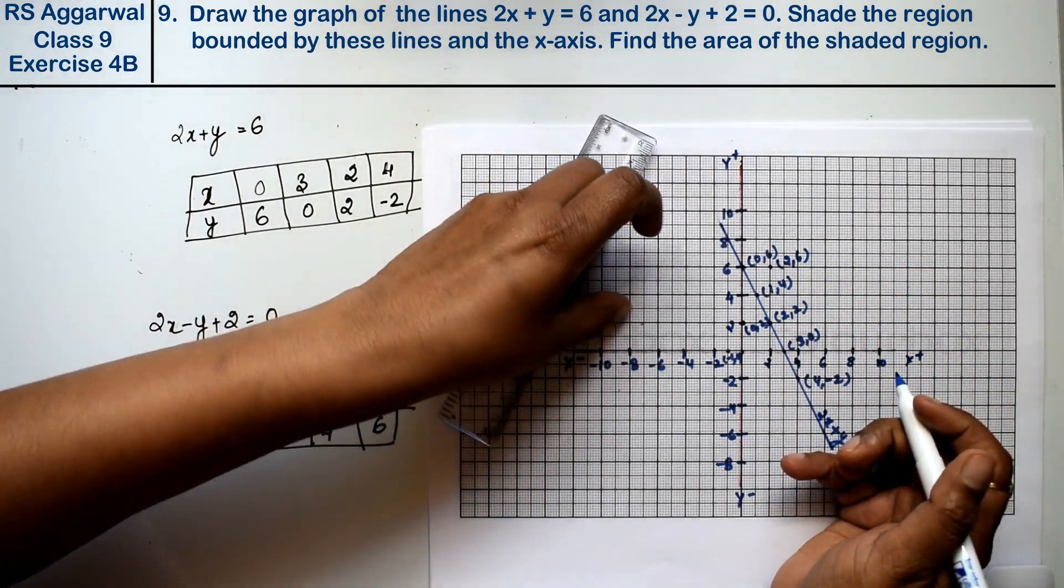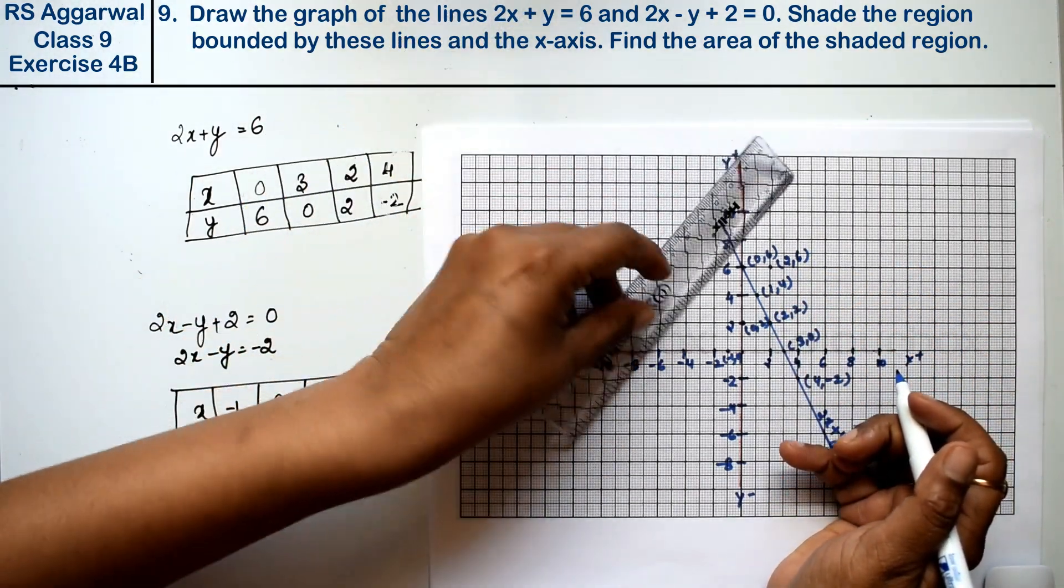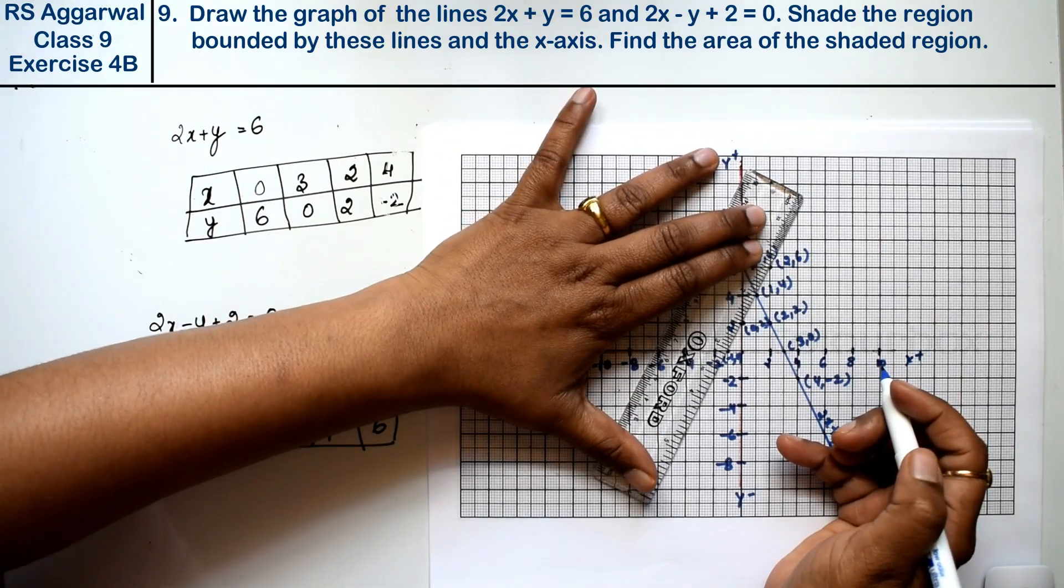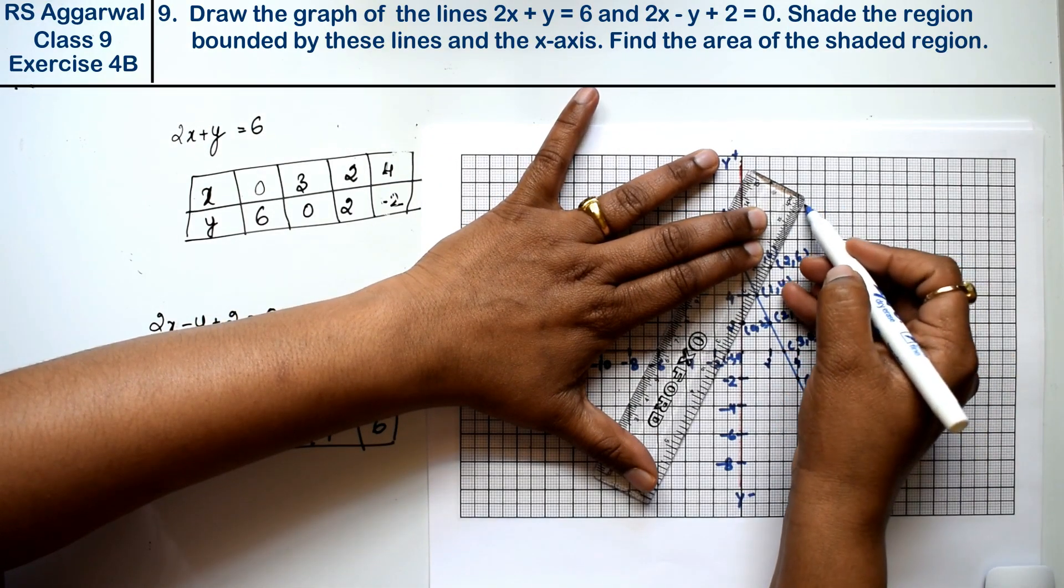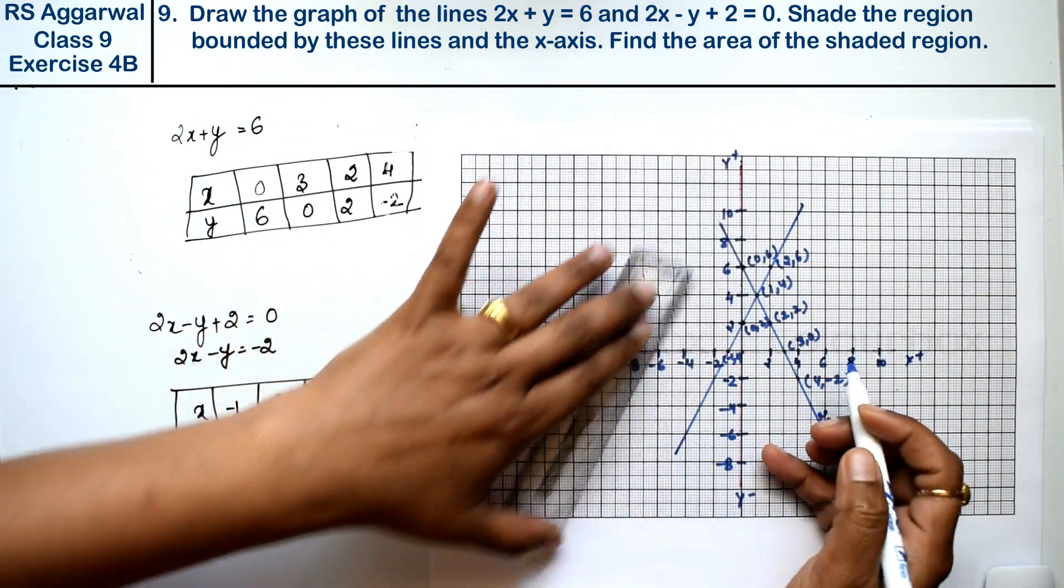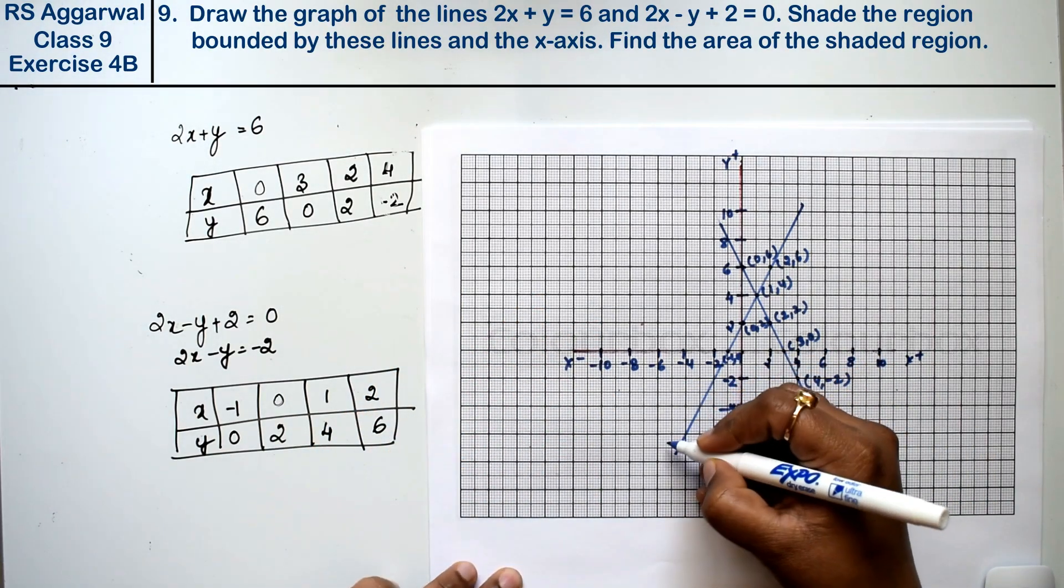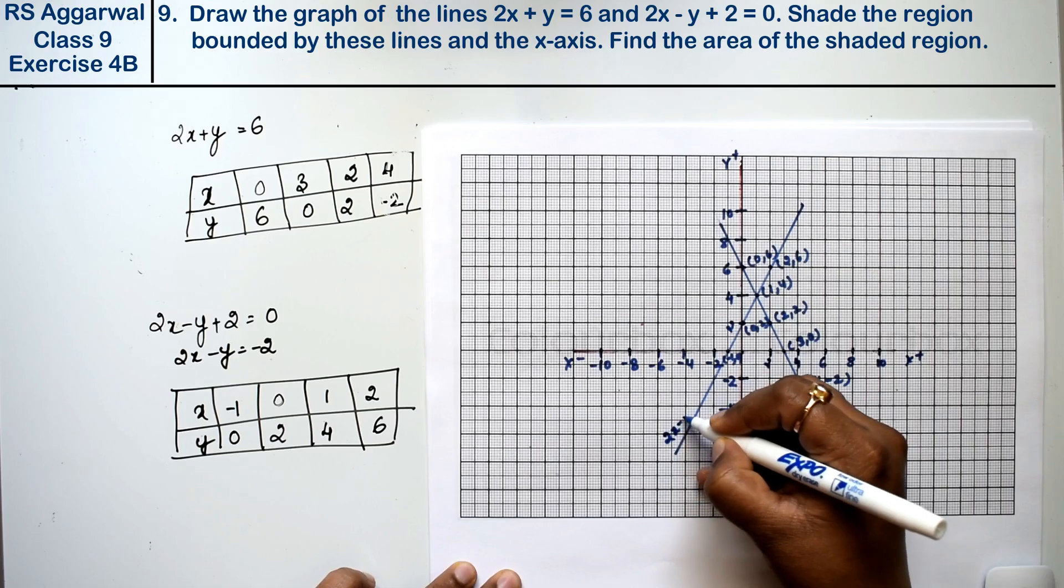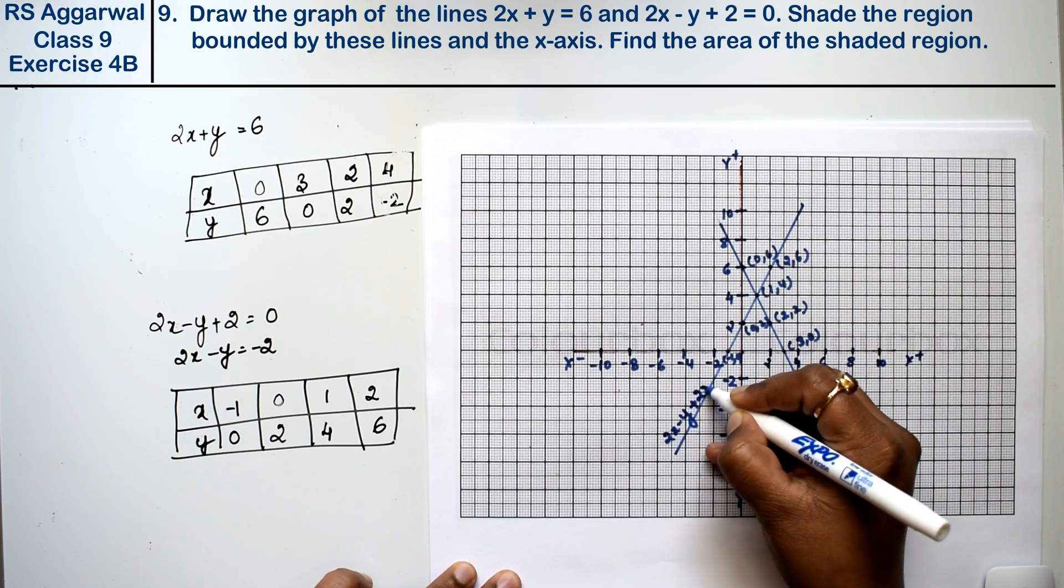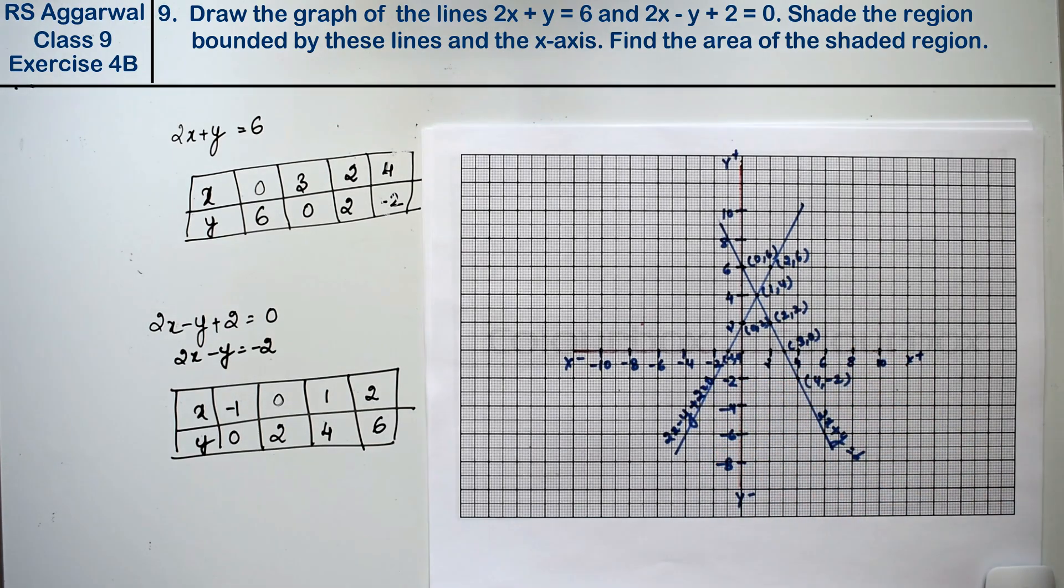Now we will join them. Look, this line is like this. Here we will write this equation: 2x minus y plus 2 equals 0. Now see what it is saying. Look, this is a triangle.